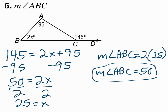Remember, the Triangle Angle Sum Theorem says that the three angles of a triangle add up to equal 180 — so if you know two angles, it's very easy to find the third. And for the Exterior Angle Theorem, the exterior angle is the sum of the remote interior angles. Use these rules to find the measures of the angles of a triangle.